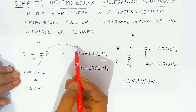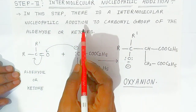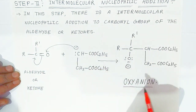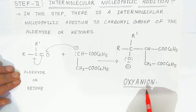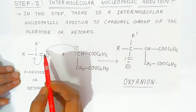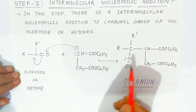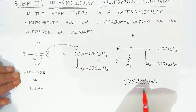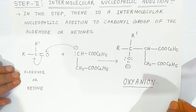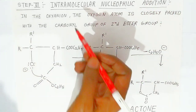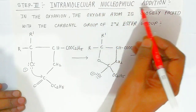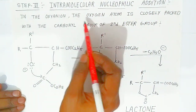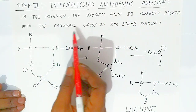The carbanion performs nucleophilic addition to the carbonyl group of the aldehyde or ketone. Once they are added, it forms an oxyanion. The bond shifts and the oxygen acquires a negative charge, which is why it is called an oxyanion.